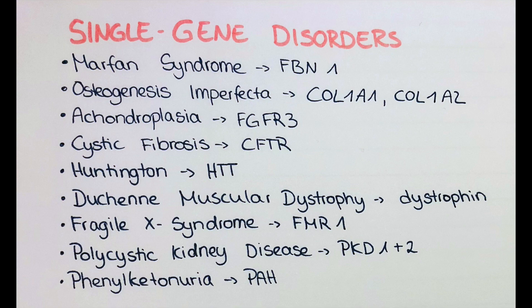Cystic fibrosis is an autosomal recessive disorder caused by a mutation in both copies of the CFTR protein — the cystic fibrosis transmembrane conductance regulator. If an individual has one healthy copy and one mutated copy, they are a carrier of this disease and can pass it on to their offspring. In this disease, thin secretions like sweat or mucus in the lung are thicker than they should be, leading to coughing up mucus, fatty stool, and poor growth.